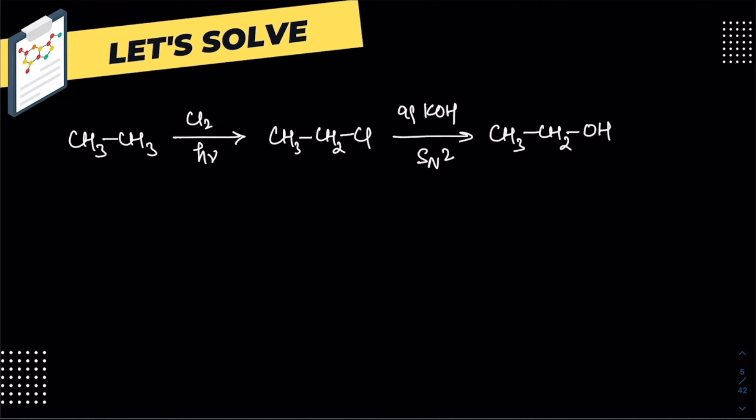Now we have a primary alcohol. Primary alcohols can be easily oxidized to carboxylic acids by using any strong oxidizing agent like K2Cr2O7 in the presence of H2SO4.